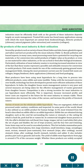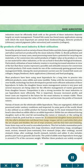Variety of meats are the wholesale edible by-products. They are segregated, chilled, processed under sanitary conditions and inspected. In some parts of the world, blood is also utilized as an edible product for human beings. In the US, meat trimmed from the head is described as edible offal or inedible by-product. Edible fats are obtained during slaughter, such as the cowl fat surrounding the rumen or stomach, or the cutting fat which is back fat, pork leaf fat or rumen fat. In commercial slaughterhouse practice in the UK, the offal is divided into red — head, liver, lungs, tongue, tail, etc. — and white — fat, the set of guts and bladder, the set of tripe, rumen, and the forefeet in trimming. Some items may not be used in uncooked products.